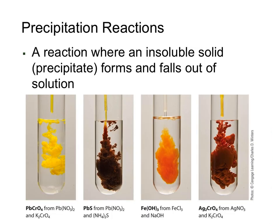Here are some other examples of precipitation reactions. We have the formation of lead chromate from the reaction of lead nitrate and potassium chromate. We have the formation of lead sulfide from the reaction of lead nitrate and ammonium sulfide. Iron(III) hydroxide forms from the reaction of iron(III) chloride plus sodium hydroxide. And finally, we see the formation of silver chromate from the reaction of silver nitrate and potassium chromate.